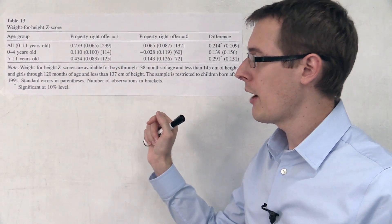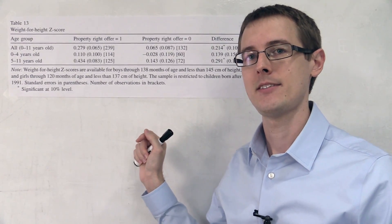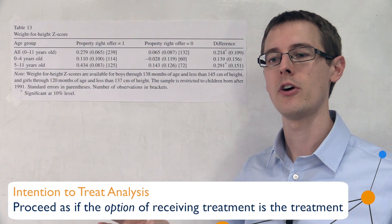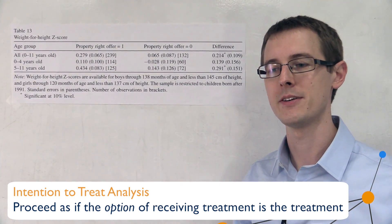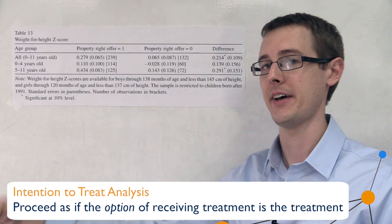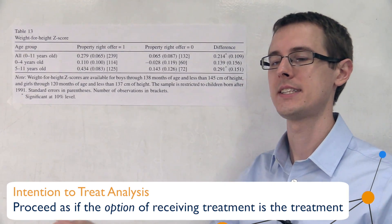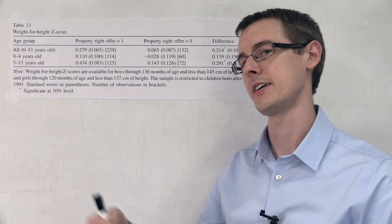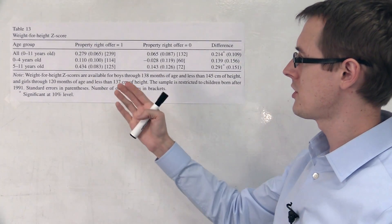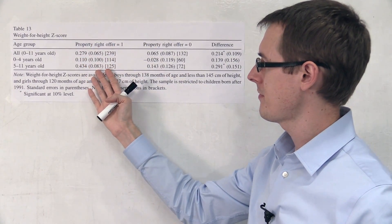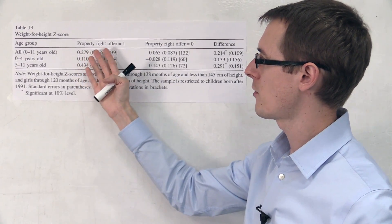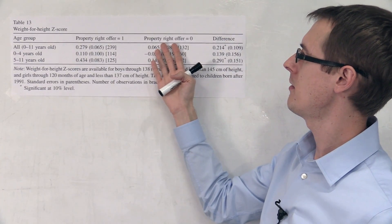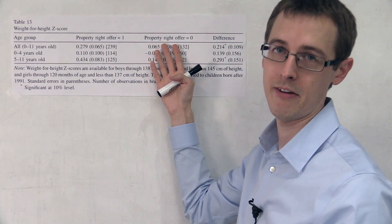So what we're going to start out with is an intention-to-treat analysis, where we completely ignore this problem and forget about the fact that we want to learn about the actual causal effect of having property rights on child health. Instead, we're just going to look at the effect of having an option of getting property rights on child health. In this column, we have effects for people who had the option; in this column, effects for people who did not.